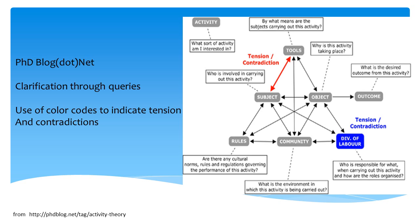Another valuable activity system representation came from a template I found at phdblog.net. Being able to answer general questions in layman's terms in order to build your own model is an excellent idea. As we can see here, the subject can be defined by who is involved in carrying out this activity, the outcome — what is the desired outcome from this activity. By simply answering these questions, you can build the basis for your activity systems diagrams. Also, the use of color is very helpful as it can draw attention to relationships or nodes that are important.